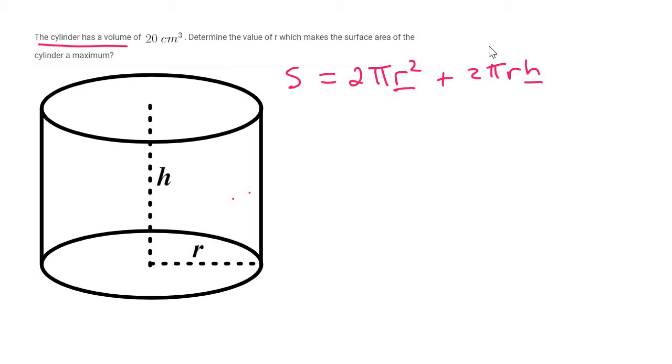So what we do is we look for other information that they've given us, and they've told us that the volume is 20 cm³. Now the volume of a cylinder is area of base times height, which is the area of a base, which is a circle, so that's pi R squared times by the height. And they've told us that that's 20.